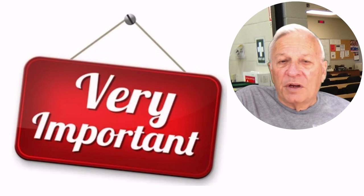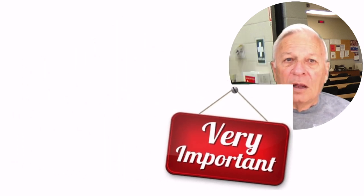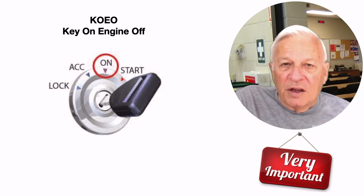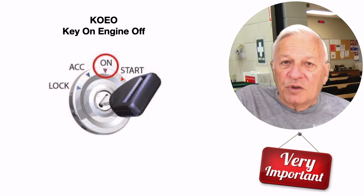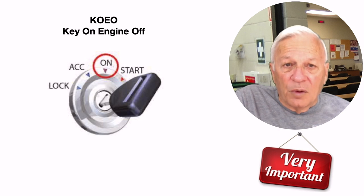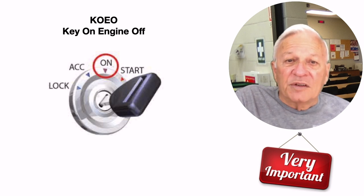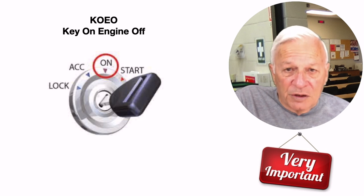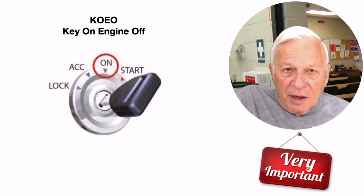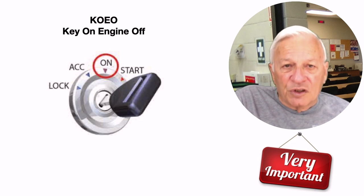Now this next point is very important. As you might expect, many electrical problems are checked with the key on, engine off. Now if the key is on, some circuits are live. That means current is probably flowing somewhere. The flowing current is flowing from the battery, and since the engine is off, the alternator is not actively recharging the battery. Since the alternator is not actively recharging the battery, the battery's state of charge is going down.